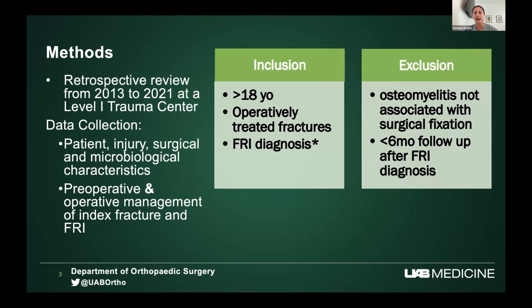Some of the confirmatory criteria include presence of pathogens on surgical site sampling, wound dehiscence, purulence, and fistulas. Suggestive signs include elevated white blood cell count, redness, and swelling — more clinical signs of infection in the area where the fracture was fixed. We excluded patients with osteomyelitis not related to surgical fixation of a fracture, and anyone with less than six months of follow-up after FRI diagnosis.